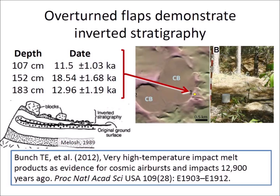In 2012, Ted Bunch and 17 co-authors were looking for evidence of a cosmic airburst or impact 12,900 years ago. In the rim of a Carolina Bay near Blackfield, South Carolina, they took samples for optically stimulated luminescence at 107, 152, and 183 centimeters below the surface. The layer at 107 centimeters had an age of 11.5 thousand years, the layer at 152 centimeters had a date of 18.5 thousand years, and the layer at 183 centimeters had a date of 12.9 thousand years. When the paper was written, the prevailing theory was that the Carolina Bays had formed by gradualistic sedimentary processes, so the sample at 152 centimeters was excluded because of the large magnitude of the age reversal. However, that kind of reversal is exactly what would be expected in the inverted flap of an impact, as shown in the inset image from the book by Professor Jay Melosh.